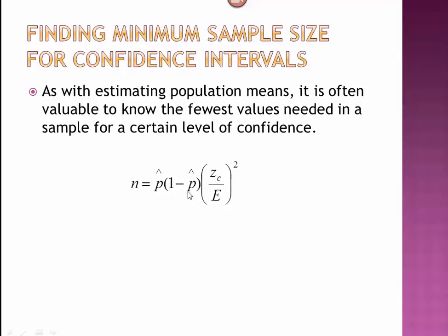We take p-hat, we multiply it by its complement, multiply by the critical value divided by the margin of error. Since we're measuring a population proportion, this error should always be in decimal form, not percent form. And then we square that.